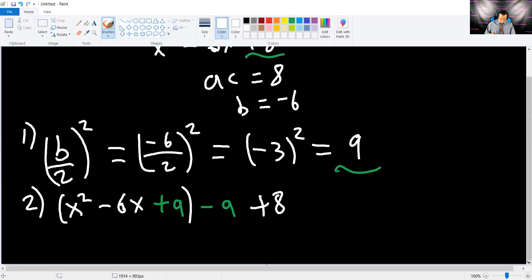And that will give you the third step. Can you find two numbers that multiply to 9 and add to negative 6? Pause the video and try to find it out for yourself. You should have found out that the numbers were negative 3 and negative 3. And because they're the same, you can simply write X minus 3 squared minus 9 plus 8, which will give you negative 1. Now you can graph this.